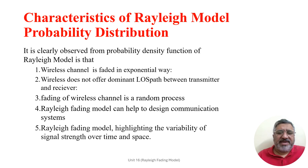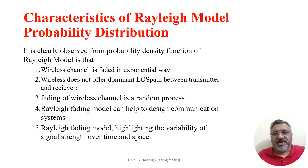Another important characteristic is no dominant path. Since the Rayleigh fading model assumes no dominant line of sight component, it is highly suitable for scenarios where signals experience multiple scattering, such as urban environments, internal spaces, and inside high-rise buildings.